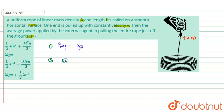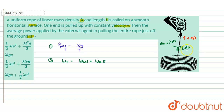The total work done W_total equals work done by the external agent plus work required to give the rope its kinetic energy. Since the rope has linear mass density lambda, we take an elemental mass dm of length dx, so dm equals lambda times dx.